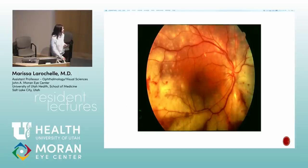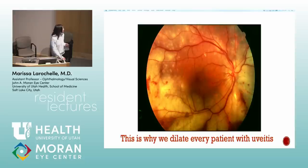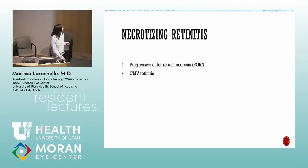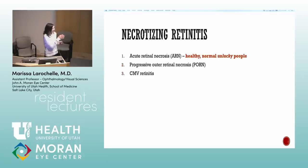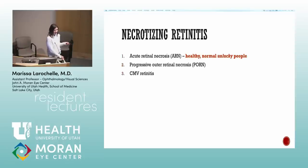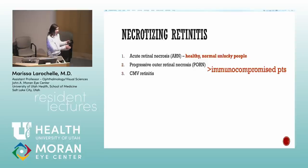Retinal whitening and hemorrhages — think viral necrotizing retinitis. This is why we dilate every patient; if you only look at the macula it looks good, but you could be missing disease in the periphery. This is one disease that can change dramatically in 48 hours. Necrotizing retinitis can happen in normal or immunocompromised patients with different forms: ARN occurs in healthy individuals, while progressive outer retinal necrosis and CMV retinitis occur in immunocompromised patients. You cannot distinguish them by picture alone — you need time course and immune status.